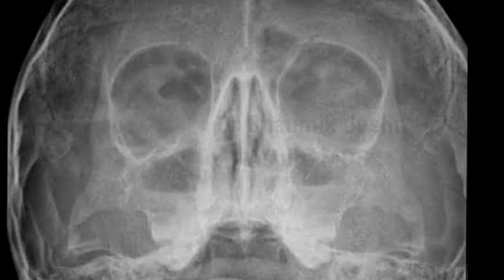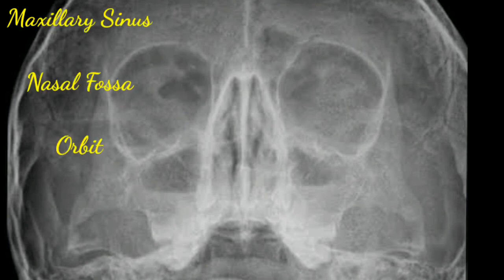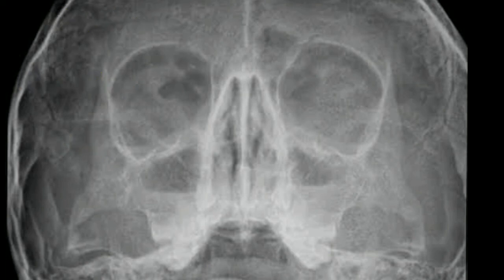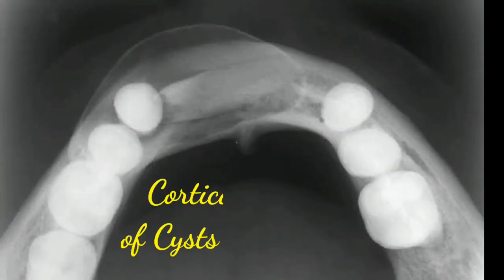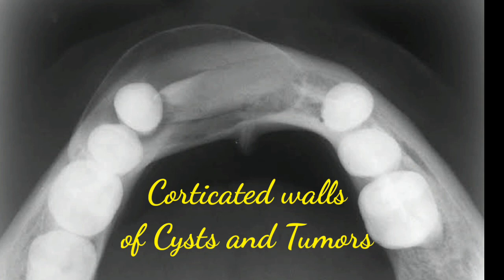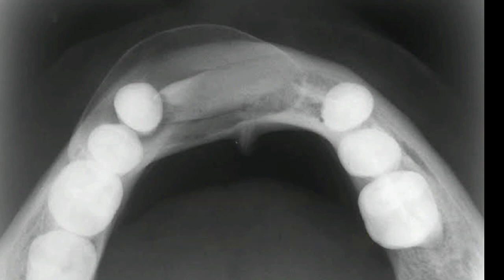Other examples of the eggshell effect are the presence of the maxillary sinus, nasal fossa, and orbit, as you can see in this radiograph — all of them appearing as radio-opaque lined structures because of the eggshell effect. Another example is the presence of corticated walls of cysts and tumors, which are also appearing more radio-opaque due to this eggshell effect.